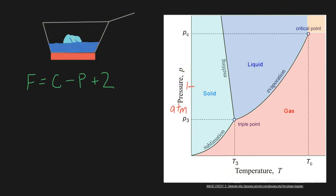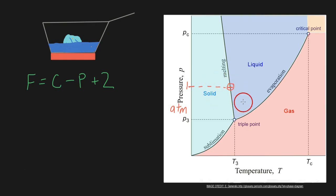As we heat up the ice, we're going to melt it — we'll have ice and water coexisting. So where does that put us on our graph? If we look at our phase diagram, we have these two-phase lines, and everything on this line represents two phases existing together. Because we're at one atmosphere, we know we're going to end up right there on that line, since this pressure stays constant throughout our experiment.